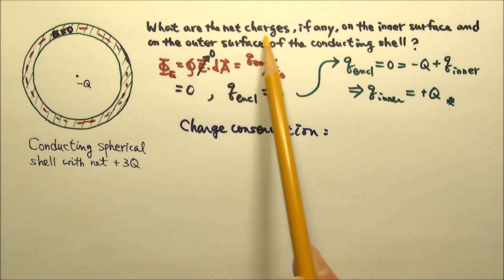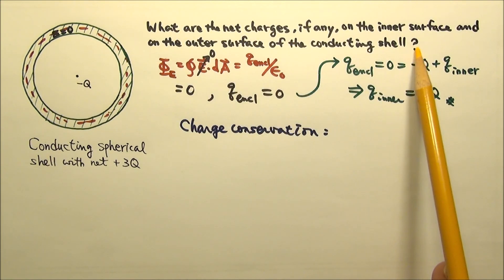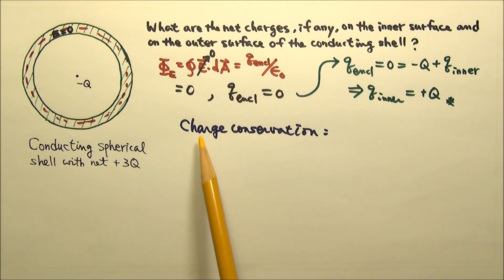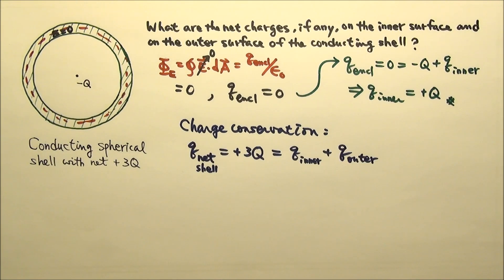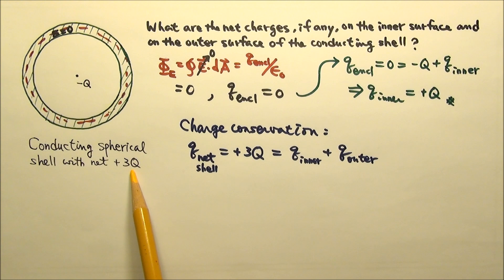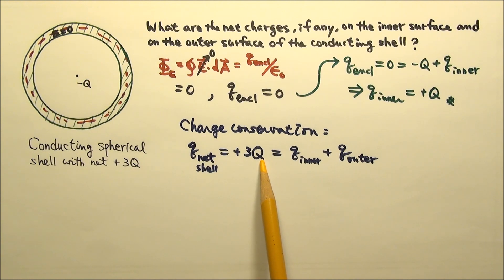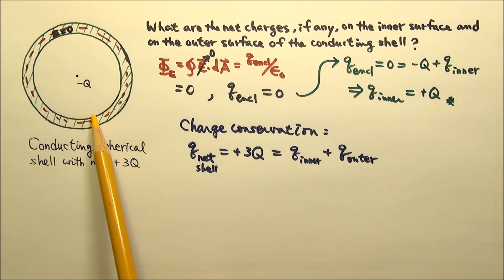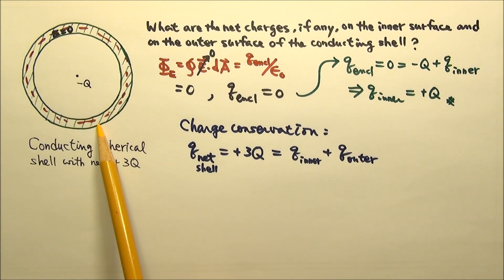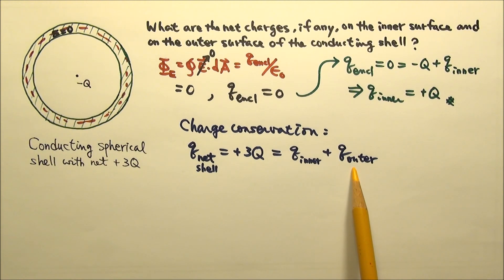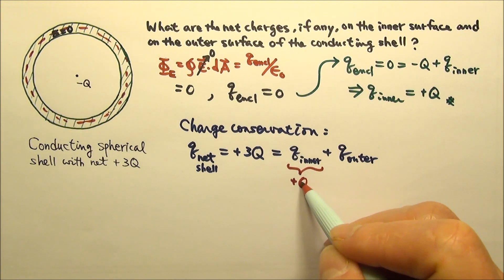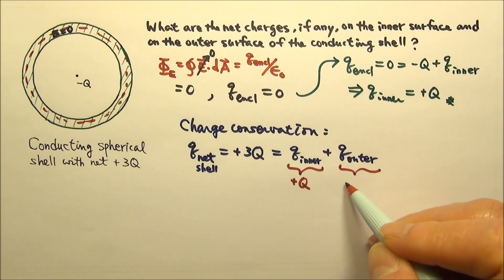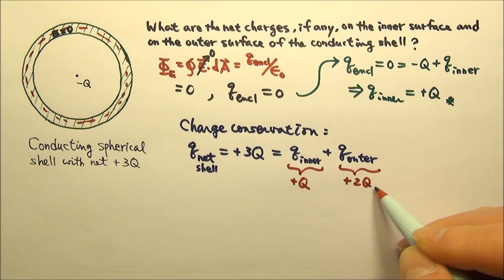As for the net charge on the outer surface of the shell, we need to use charge conservation. We know that the net charge on the conducting shell is positive 3q, and these charges can only be on the inner surface and the outer surface. Since q inner is positive 1q, q outer must be positive 2q.